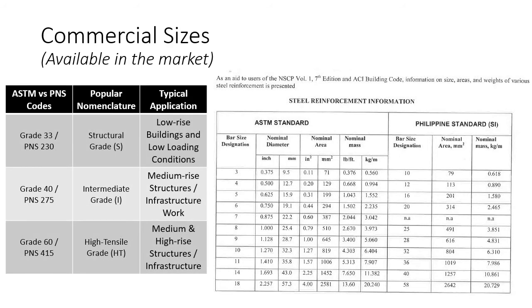Next is the rebar grades. Grade 33 or PNS 230 — you usually use this for low-rise buildings and low-loading conditions. Basically, these are elements like masonry walls, or stirrups and ties for beams or columns.